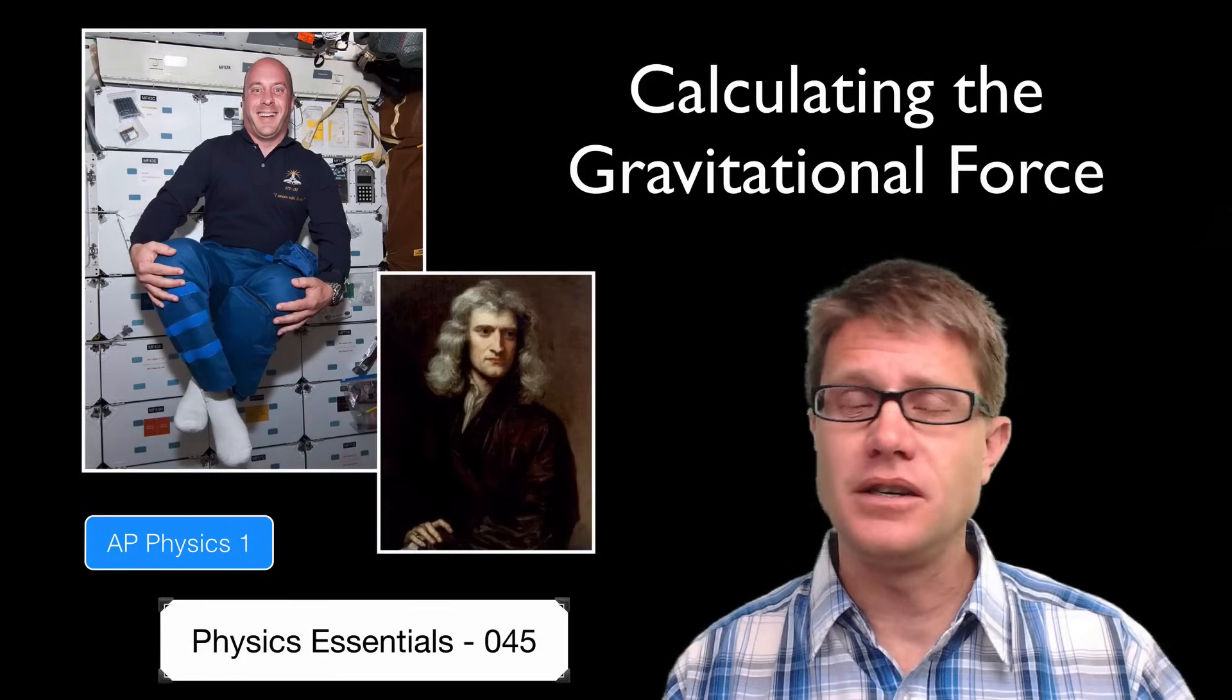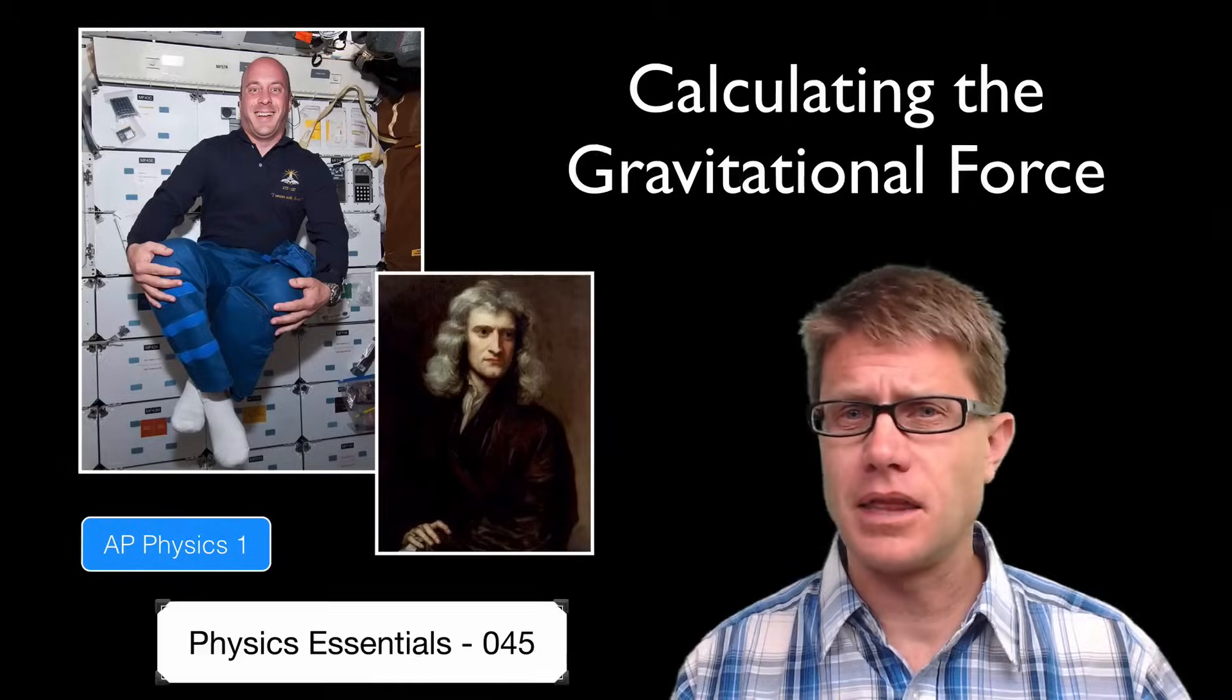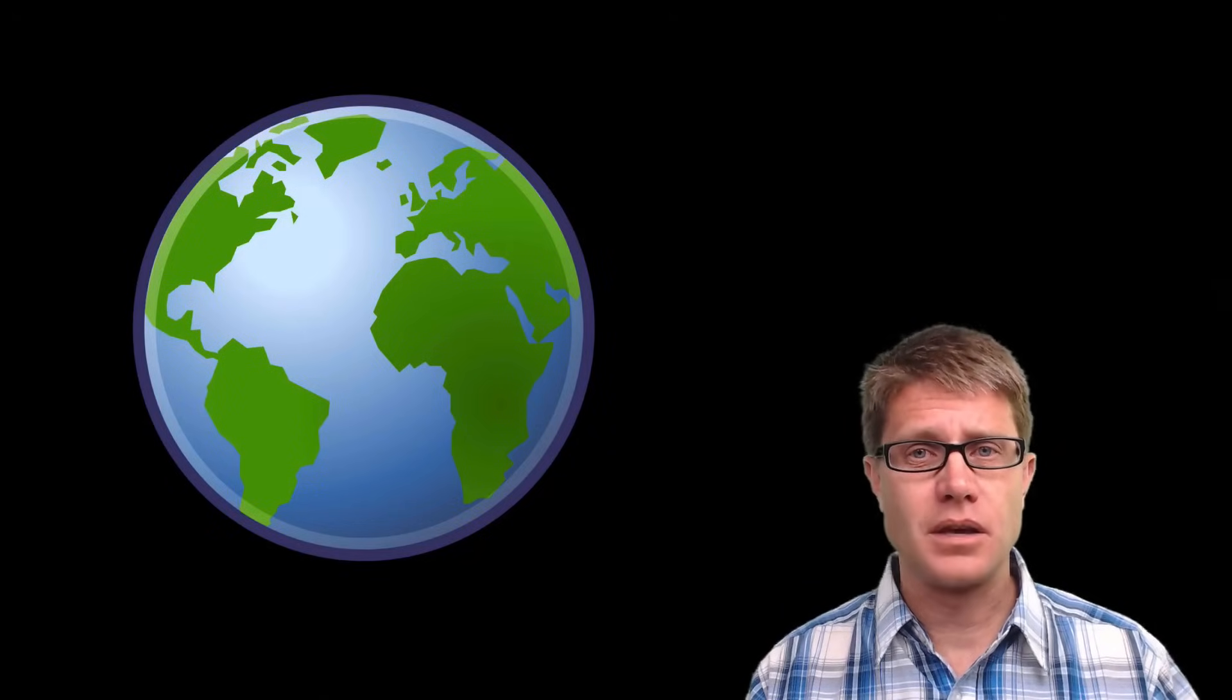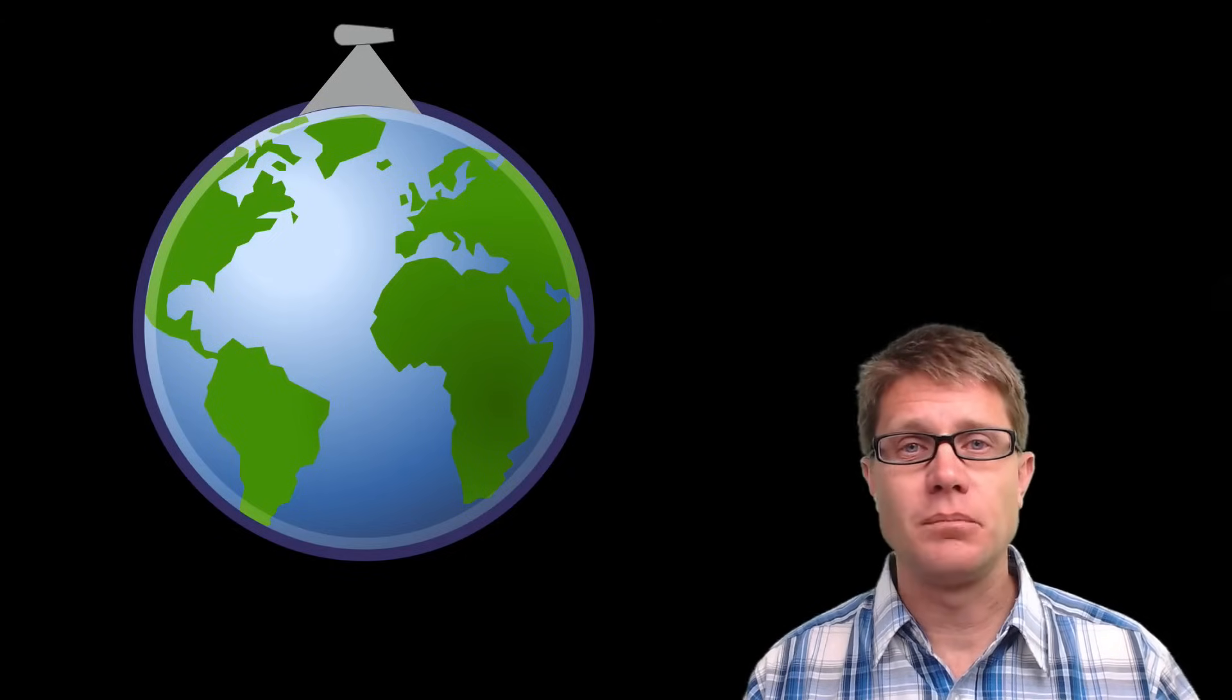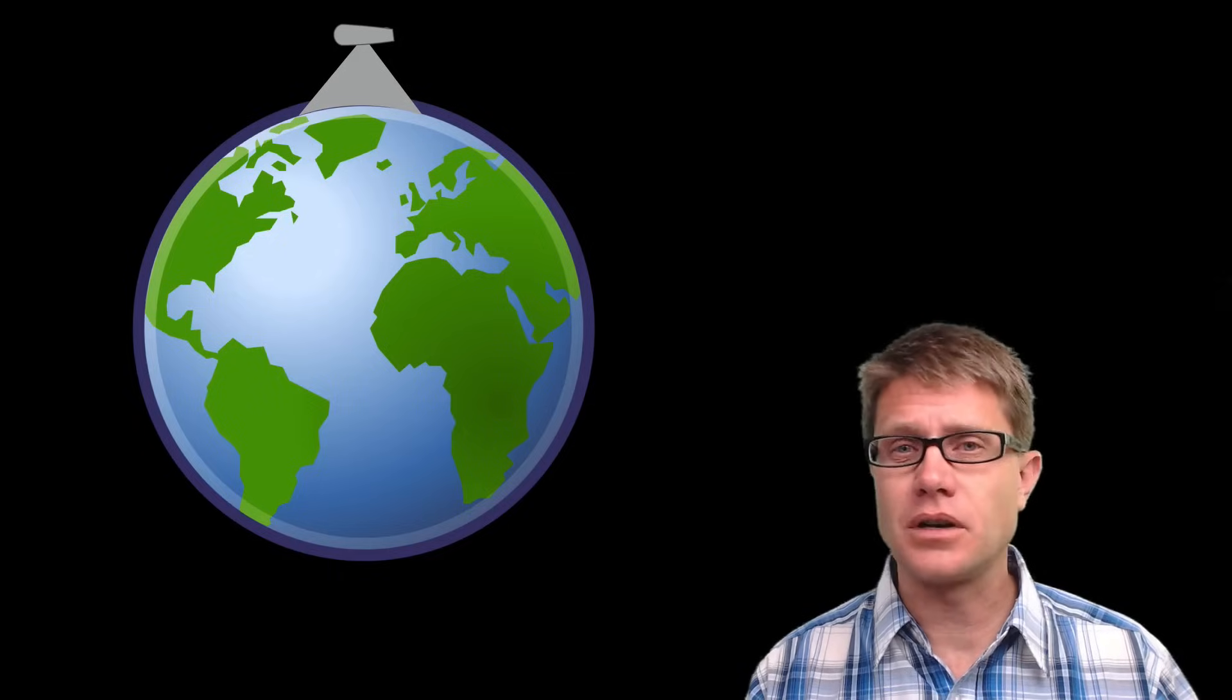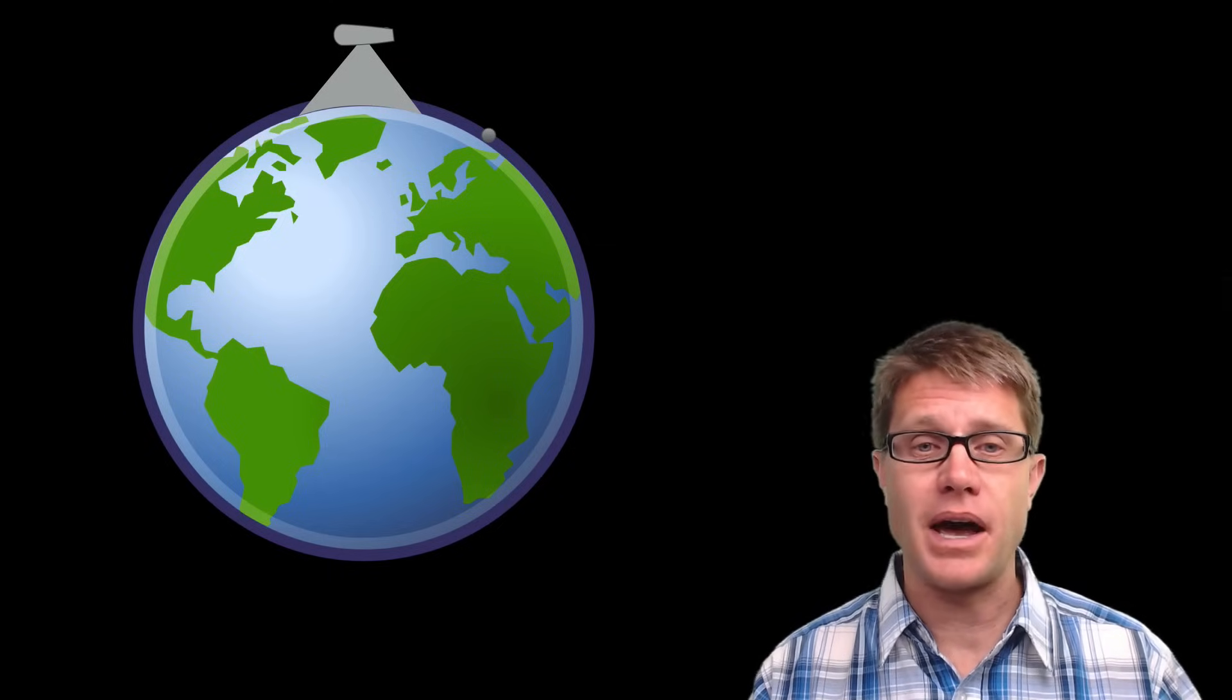And so Newton explained this years ago. Think about it like this. Imagine that we have the earth and we build a giant mountain on it. And then we put a cannon at the top of that mountain. And we launch a cannonball out at the horizontal. What is going to happen? Well it is going to fall to earth. There is a gravitational force between the cannonball and the earth. And so it is going to follow this nice path.